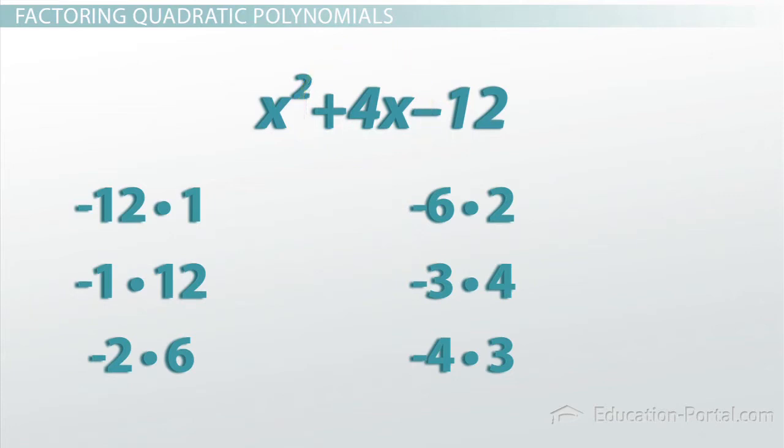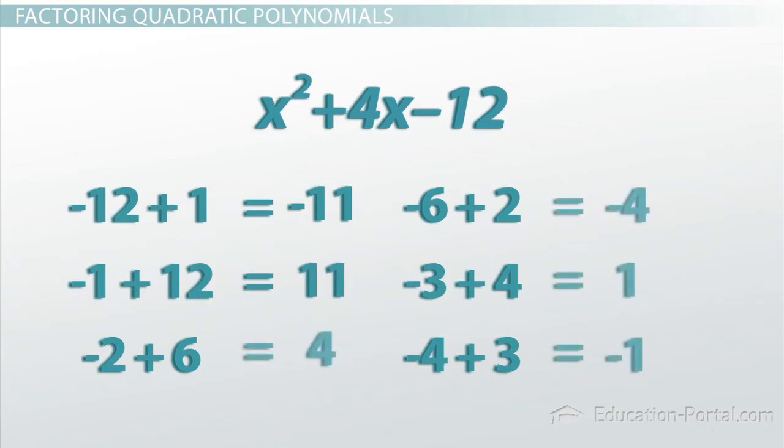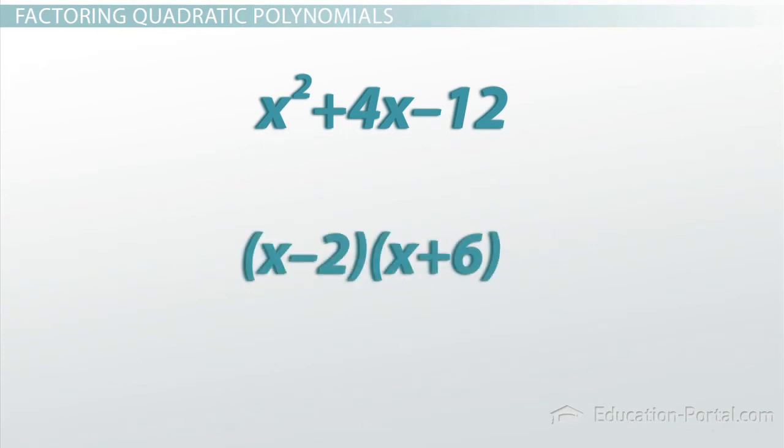Now 4x has to be the sum of our two numbers. So if we add these two together, 1 and minus 12, we get minus 11. 12 minus 1 is 11, and so on and so forth. Now sure enough, one of these numbers is what we need, which is 4. So we know that the two constants that are in our two terms are minus 2 and 6. So I can rewrite this as x minus 2 times x plus 6.